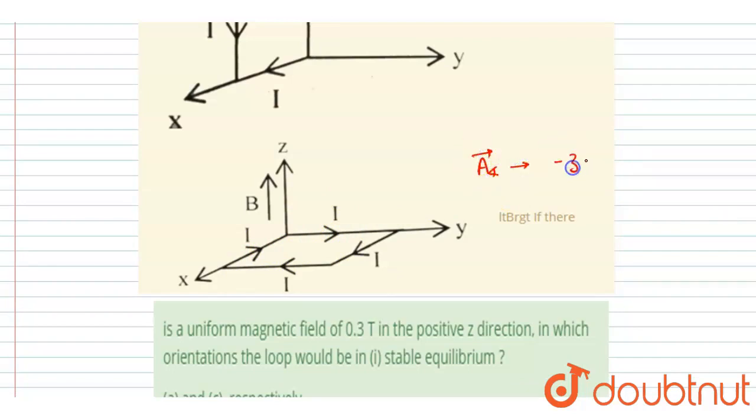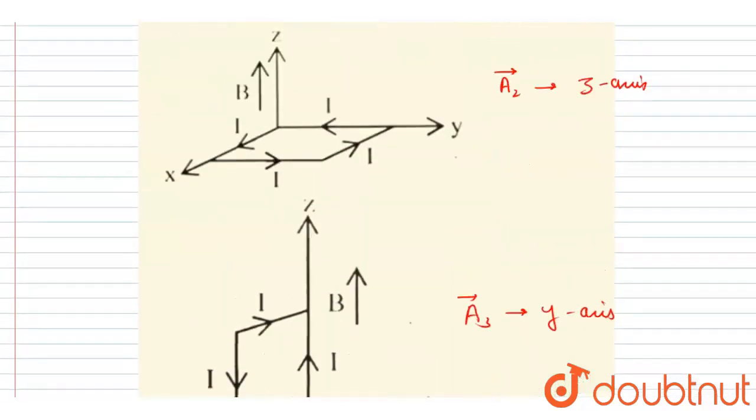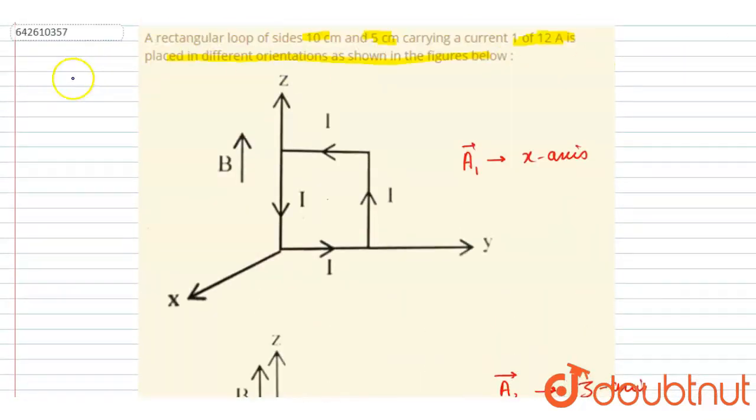For stable equilibrium, the area vector and the B vector should be parallel to each other. Since along the area vector the magnetic moment direction will be directed, I will write: if the magnetic moment and the magnetic field are parallel, it will be stable equilibrium.